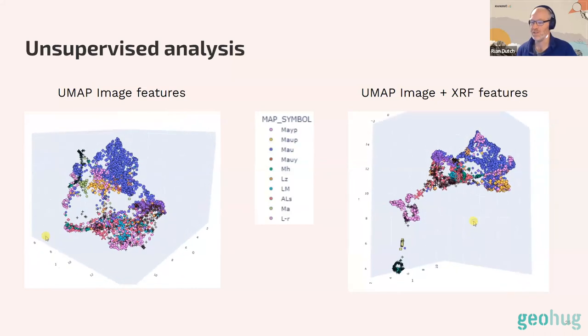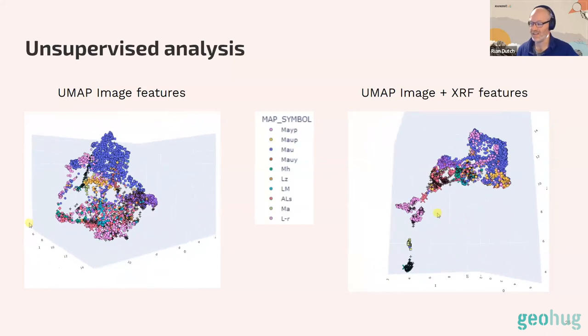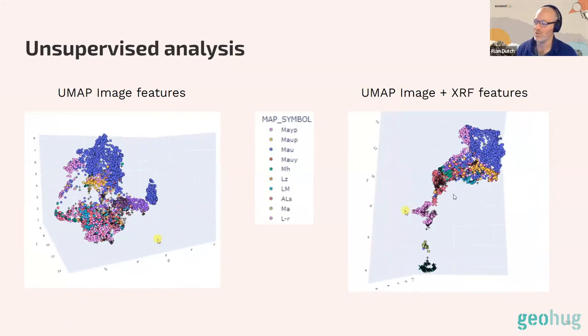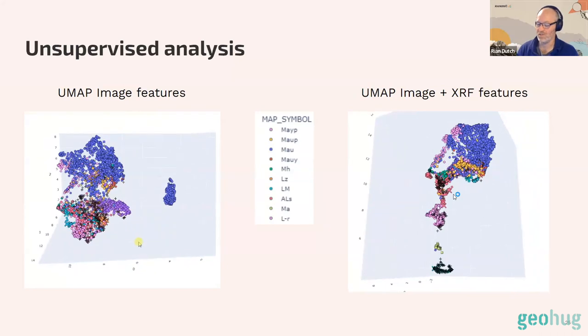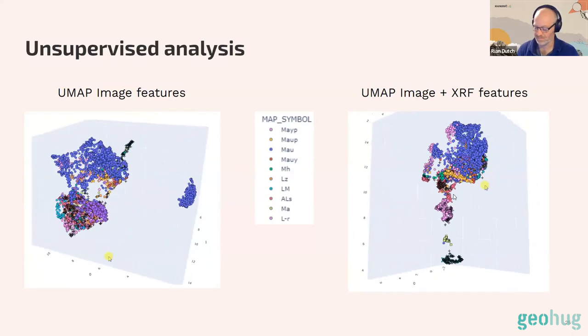When you include the chemistry, the groups are refined — they clump more clearly and are better separated — suggesting we might actually be able to model stratigraphy using this combined information.